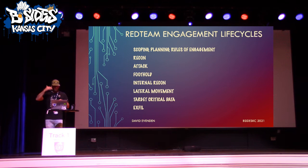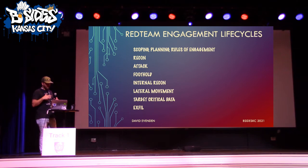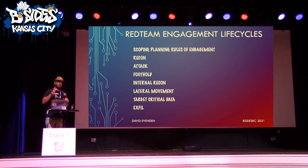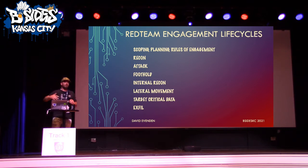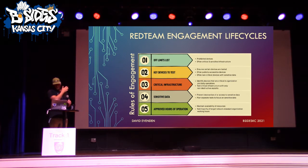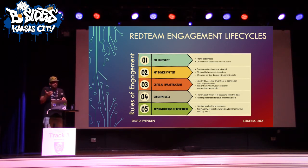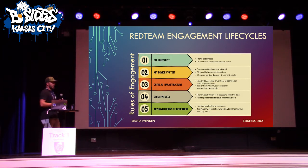In terms of recon, attack, foothold, internal recon, lateral movement, target, critical data, and then exfil data — I'll talk specifically through the exploitation lifecycle stages of red team and pen testing. Your CYA card is your rules of engagement. Develop off-limits lists — don't target these key devices. Critical infrastructure is sometimes the target, but sometimes absolutely off-limits. And sensitive data — if you do identify it, you are not allowed to download it off the target system. Just take a small screenshot of a file name or something similar.